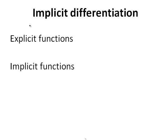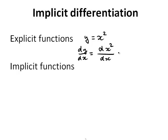Let's have a look at implicit differentiation. First of all, let's consider explicit functions. An explicit function is a function of the form y equals a function in x. For example, y equals x squared — explicit because it has been solved for y. If we are required to find the derivative of such an explicit function, we would write dy by dx, which is the derivative of x squared with respect to x, and that is simply 2x. So that's straightforward.